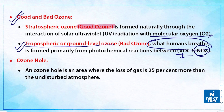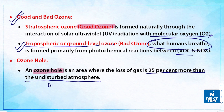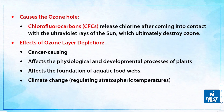An ozone hole is an area where the loss of ozone gas is 25 percent more than in the undisturbed atmosphere. It can also be defined as a region where ozone concentration dips below 220 Dobson units. As noted, the Dobson unit is a measure of the thickness of the ozone layer.